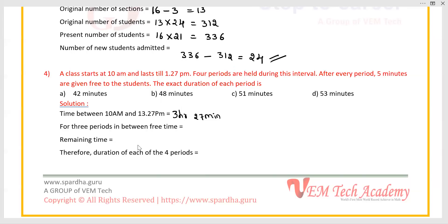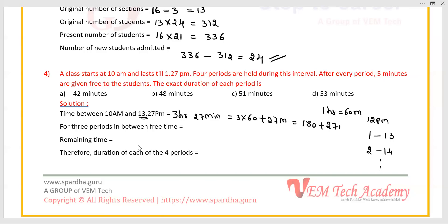The ending time is taken as 13 hours 27 minutes using 24-hour format — after 12 PM, 1 o'clock is considered 13, 2 o'clock as 14, and so on. Convert 3 hours 27 minutes into minutes: 3 hours into 60 minutes equals 180, plus 27 minutes equals 207 minutes total.